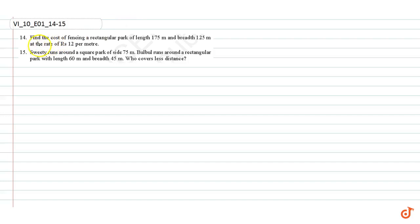In this video we are going to solve question number 14 and 15. Question number 14: find the cost of fencing a rectangular park of length 175 meters and breadth 125 meters at the rate of rupees 12 per meter.